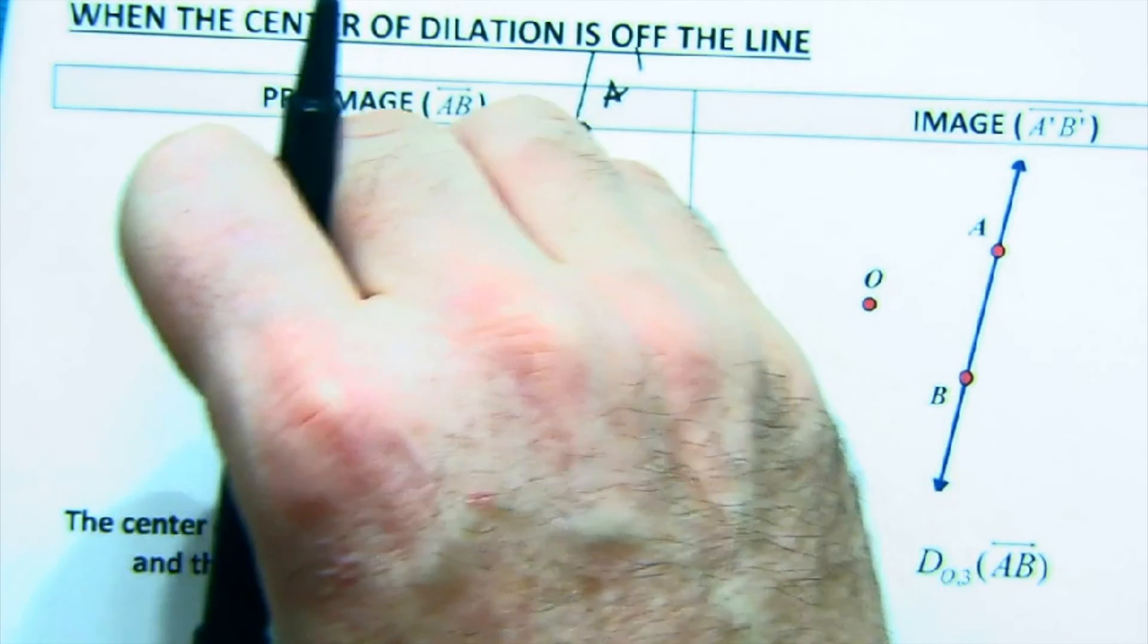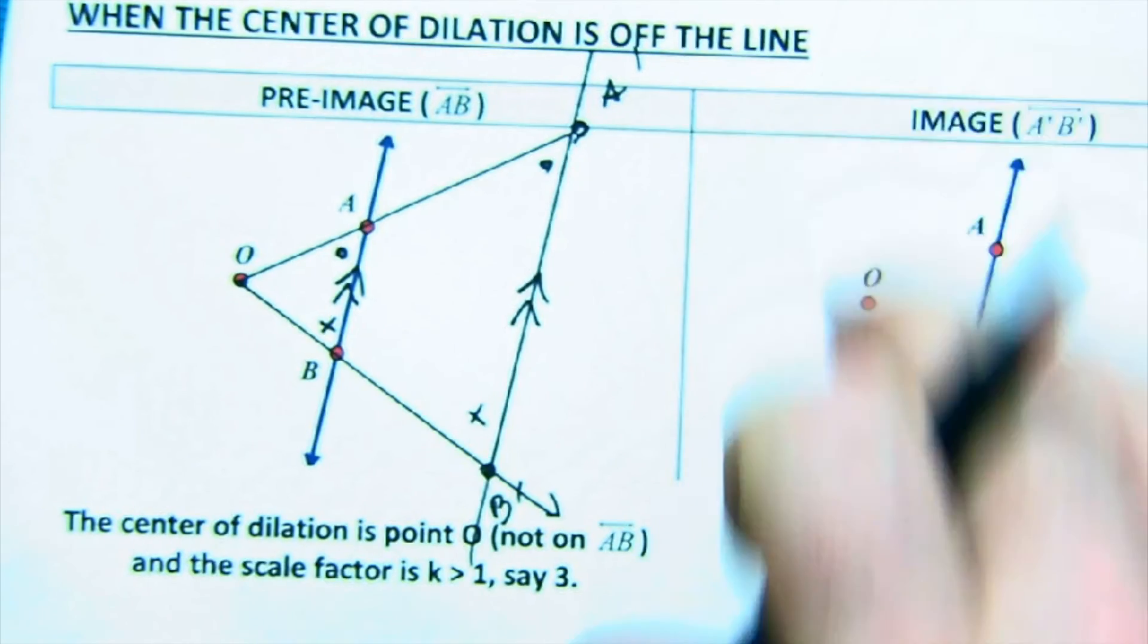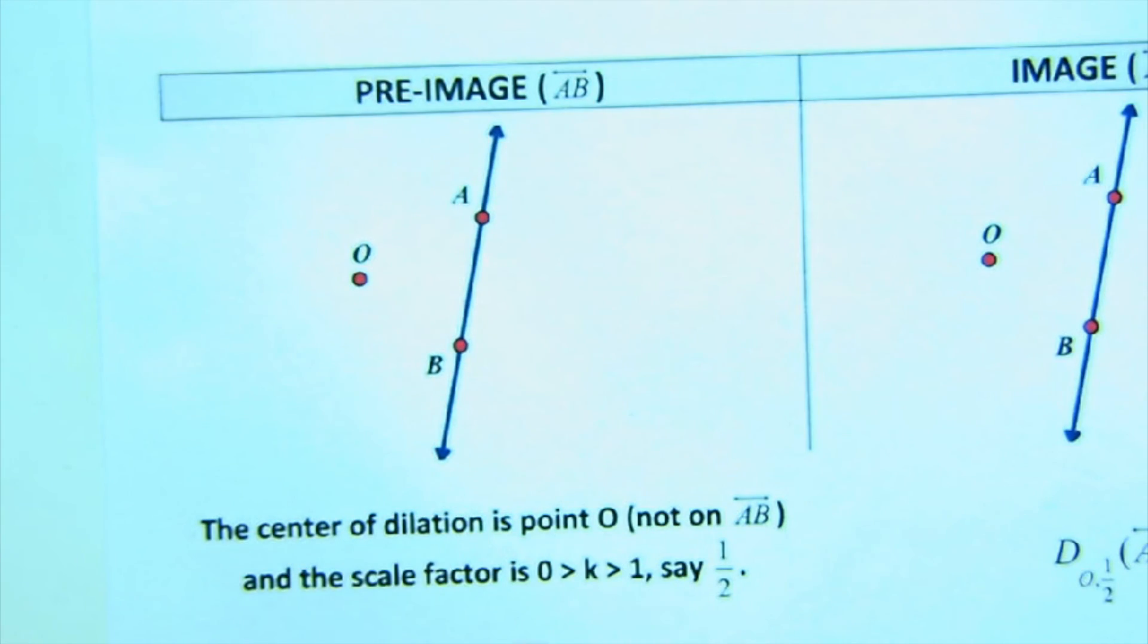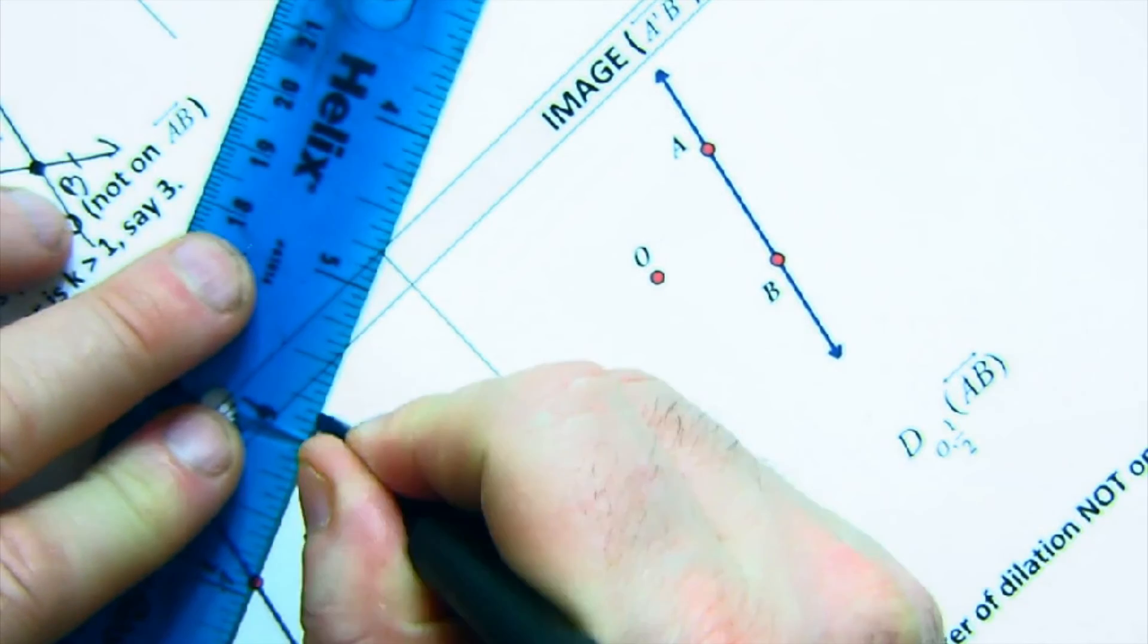And so dilations really are about the idea of angles and about parallel lines. And so when you dilate something, a line, when the point is not on the line, it will send it further away.